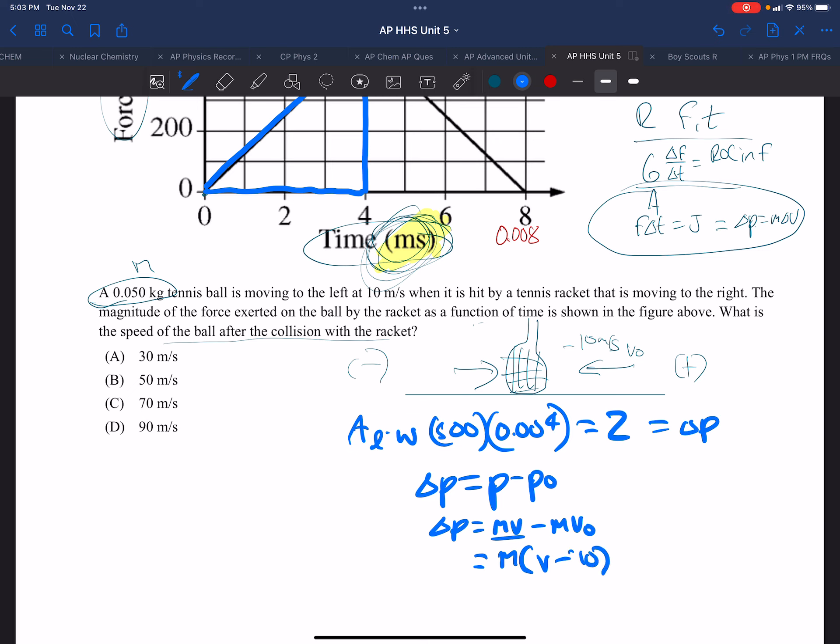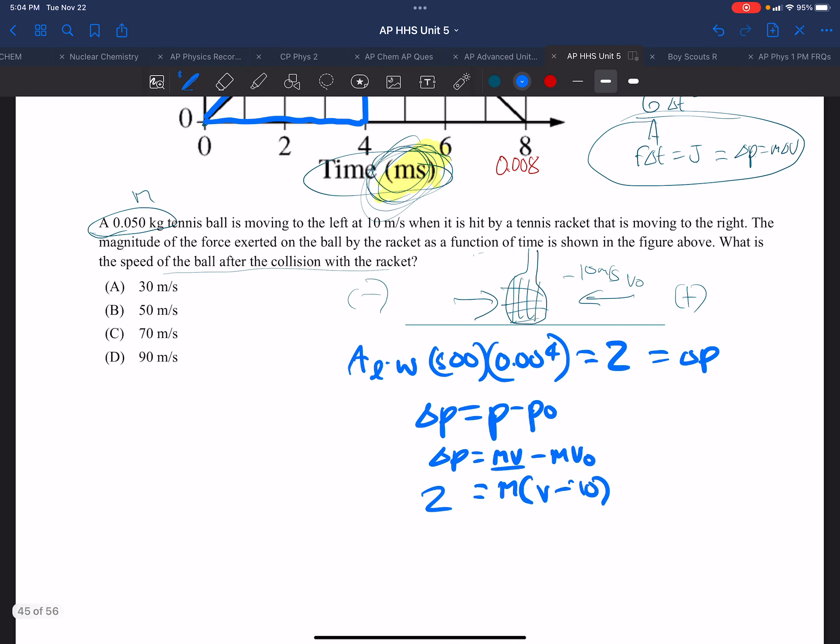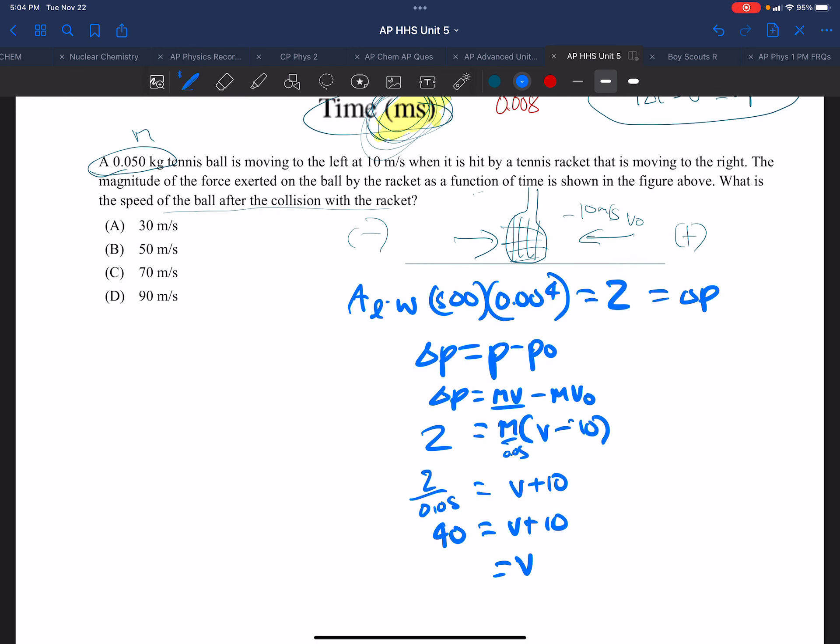And the change in momentum we know is 2. And the mass is 0.05. So dividing both sides by 0.05 gives us V minus, V plus 10. And 2 divided by 0.05 is 40. So 40 equals V plus 10. And V then is 30 meters per second.